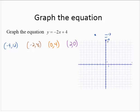Negative 2, 8, 0, 4, and 2, 0. Now, if I look at those points, they appear to be collinear. They appear to be on the same line. So what we do to graph the equation is we draw the line that passes through those points.